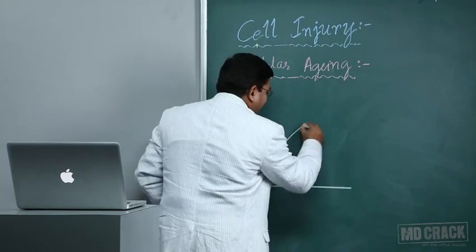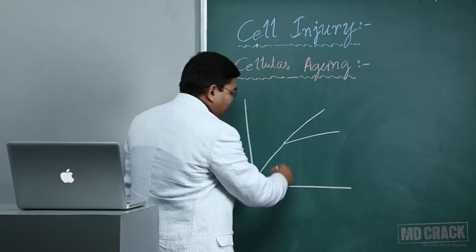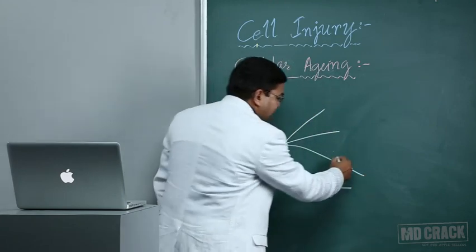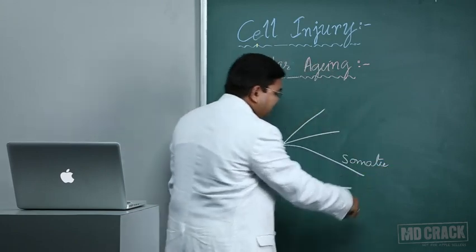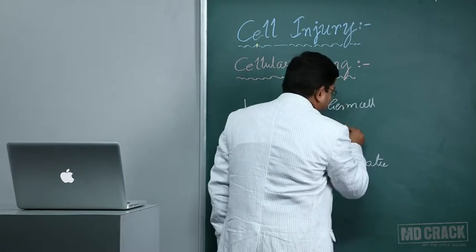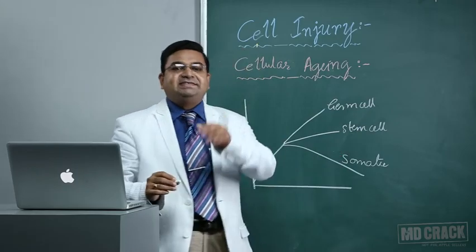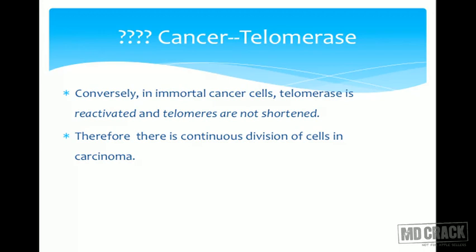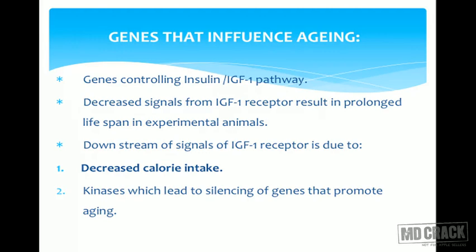In adult somatic cells, telomerase enzyme activity goes down; high activity is maintained only in stem cells and germ cells. In cancer, however, telomerase gets reactivated. This reactivation means telomeres do not get shortened, allowing continuous proliferation of cells — that is how immortal cancer cells arise. This telomerase reactivation is a key mechanism in carcinomas.